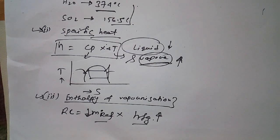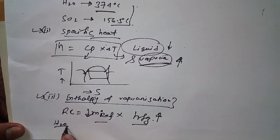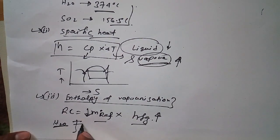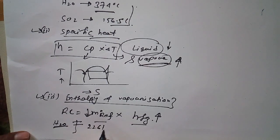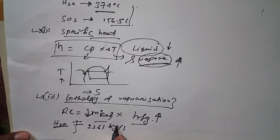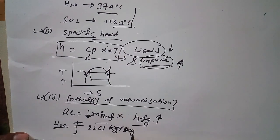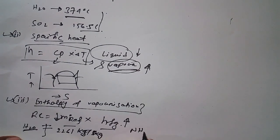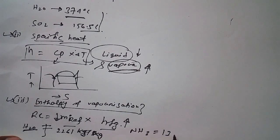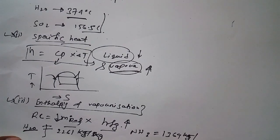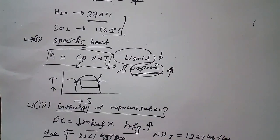If we see the highest enthalpy of vaporization value among refrigerants, water has a value of 2261 kJ/kg, and NH3 has a specific enthalpy of vaporization of 1369 kJ/kg.